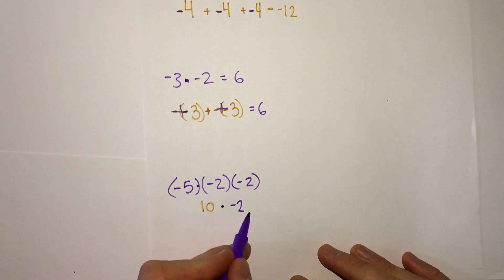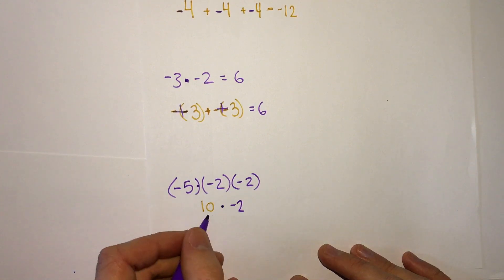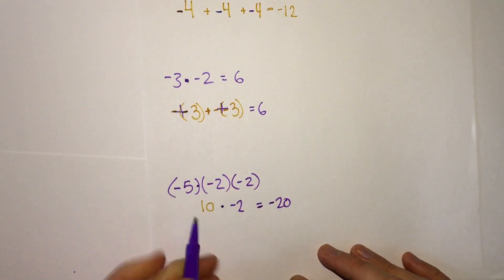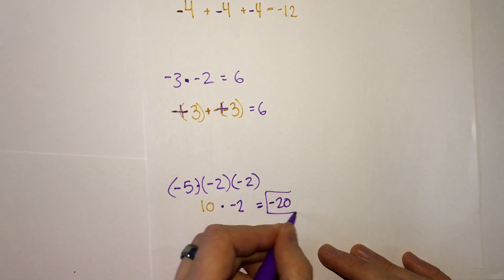But we still have times negative 2. From our rules again, we have 10 times negative 2 is negative 20, because a positive times a negative is negative. So our final answer with three negatives is negative 20.